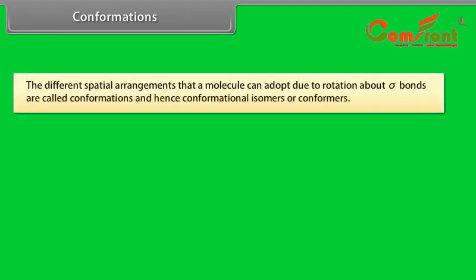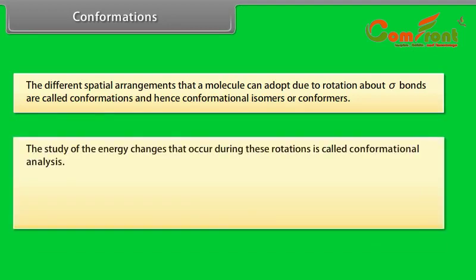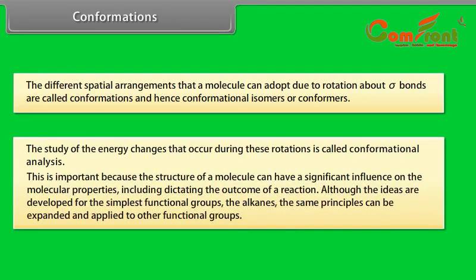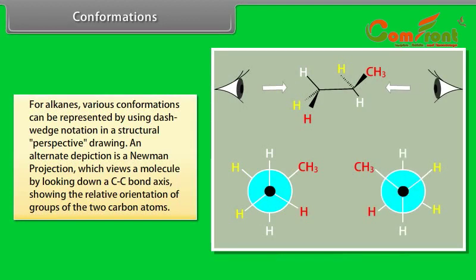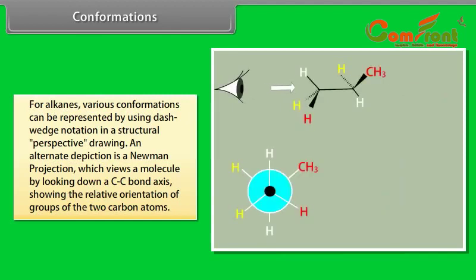Conformations: The different spatial arrangements that a molecule can adopt due to rotation about sigma bonds are called conformations, and hence conformational isomers or conformers. The study of the energy changes that occur during these rotations is called conformational analysis. This is important because the structure of a molecule can have a significant influence on molecular properties, including dictating the outcome of a reaction. For alkanes, various conformations can be represented using dash-wedge notation in a structural perspective drawing. An alternate depiction is a Newman projection, which views a molecule by looking down the C-C bond axis, showing the relative orientation of groups on the two carbon atoms.